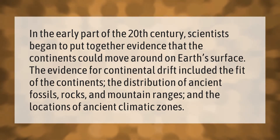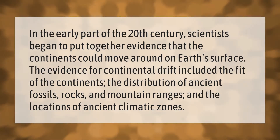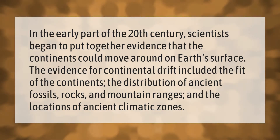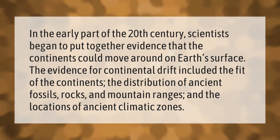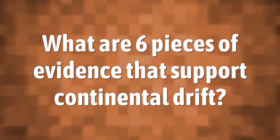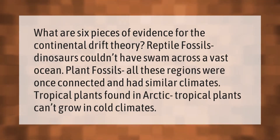In the early part of the 20th century, scientists began to put together evidence that the continents could move around on Earth's surface. The evidence for continental drift included the fit of the continents, the distribution of ancient fossils, rocks and mountain ranges, and the locations of ancient climatic zones.